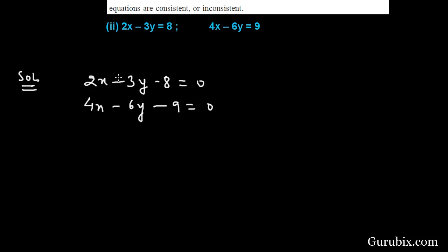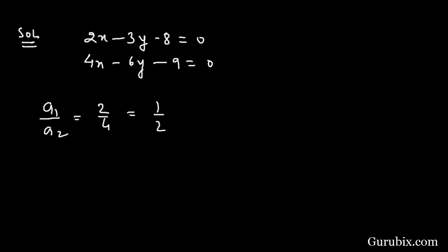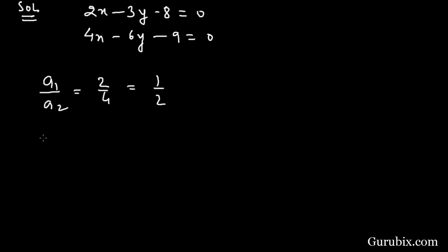Now we shall calculate a1 over a2, that will be 2 over 4, this means 1 over 2. b1 over b2 will be minus 3 over minus 6, this means 1 over 2. And c1 over c2, that is minus 8 over minus 9, equals to 8 over 9.